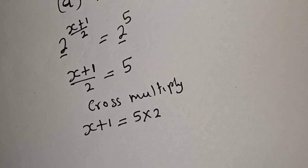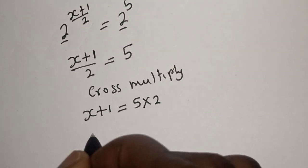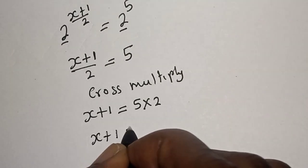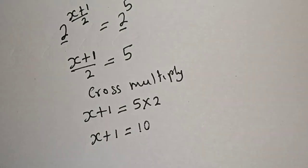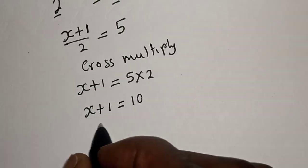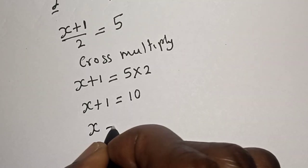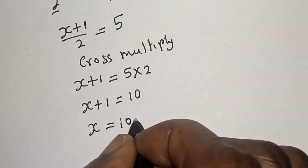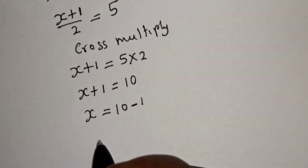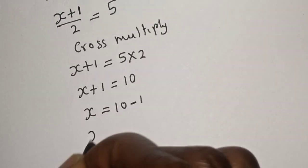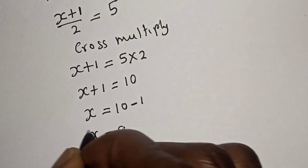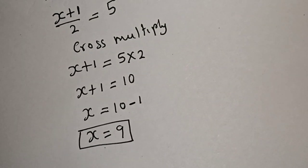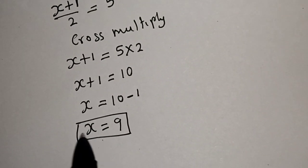From here we can cross multiply. Then we have s plus 1 is equal to 5 times 2. So s plus 1 is equal to 10, and we have s is equal to 10 minus 1, therefore s is equal to 9. This is the answer. Now we can check to confirm if our answer is right or wrong.